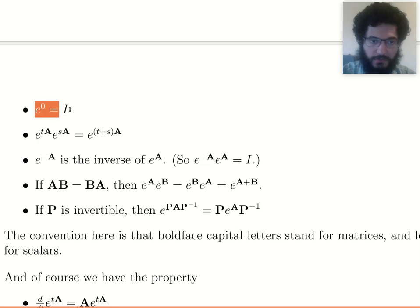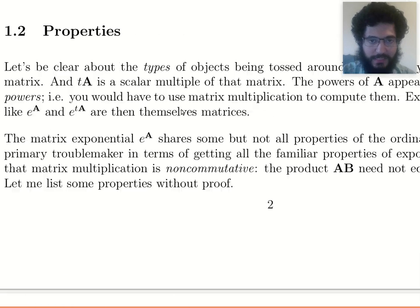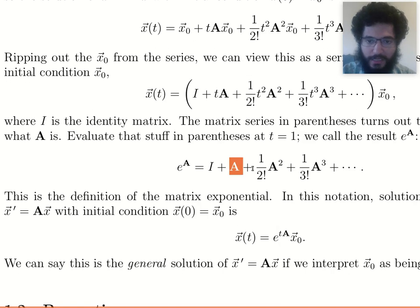Here's the first one. We already saw this one. e to the 0 is the identity. That one's easy. We just got it by plugging in 0 for A, and identity is the only non-zero term in this infinite series.